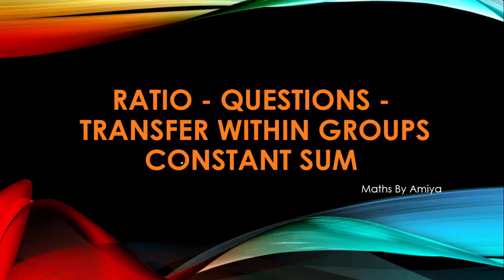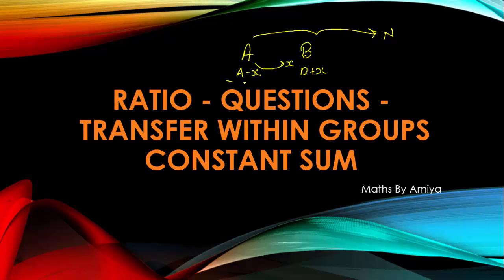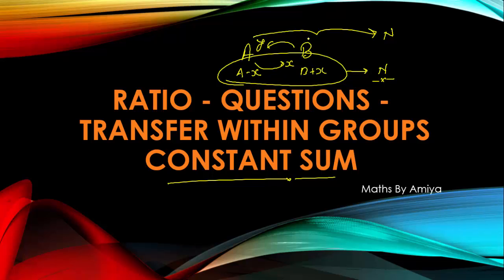This concept video is totally upon 'transfer within groups — constant sum.' If we have two groups A and B with total elements N, and we transfer x elements from A to B, then A becomes A minus x and B becomes B plus x, but the total remains N. Because the elements are transferred within the groups, the total summation is always constant.